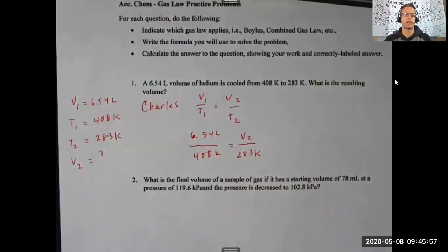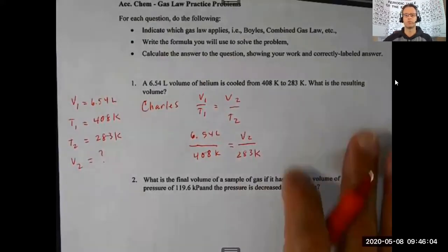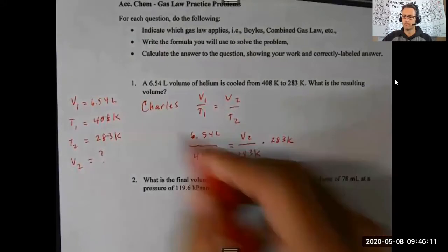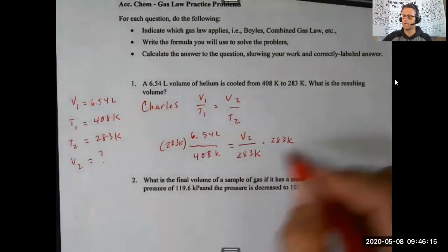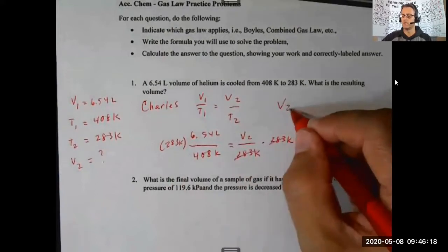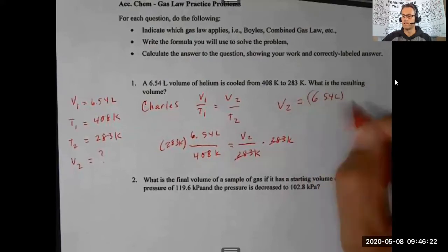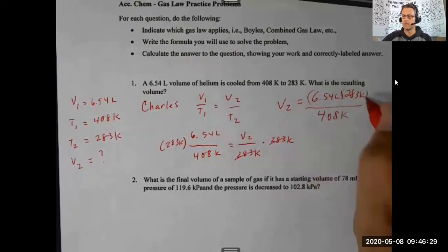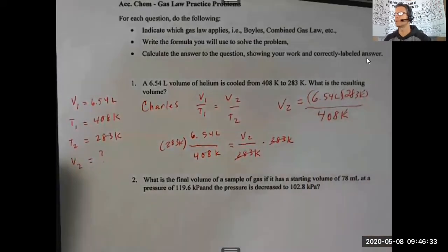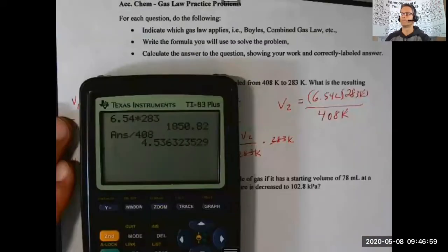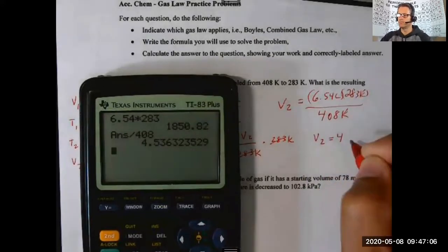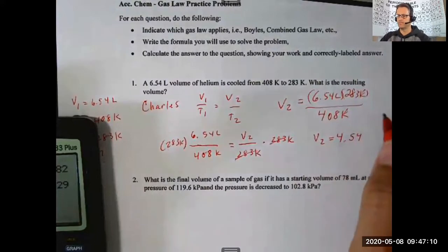This just becomes an algebra problem. I multiply both sides by 283 kelvin to isolate V2. So V2 equals 6.54 liters times 283 kelvin divided by 408 kelvin. The kelvins cancel out. When I plug that into the calculator, my new volume comes out to 4.54 liters.